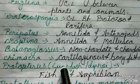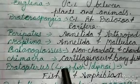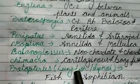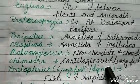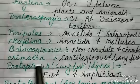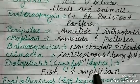Protopterus is a lungfish which comes under the group Dipnoi. It is the connecting link between fish and amphibians.